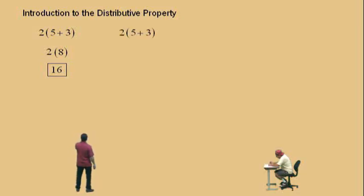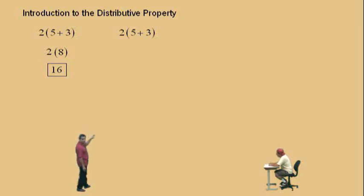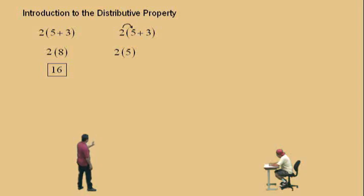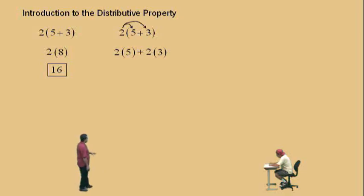Now, same problem, but now we're going to demonstrate the distributive property. Notice there's a 2 outside the parenthesis — that means you're going to multiply. But you don't have to add what's in the parenthesis first. What we're going to do is distribute the 2 to the 5 and to the 3 by multiplication. We first start with 2 times 5, bring that down. Our operation was addition, so we bring that down. And then we take 2 times 3. The 2 was distributed to each of the 5 and the 3.